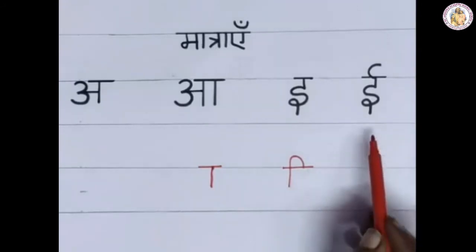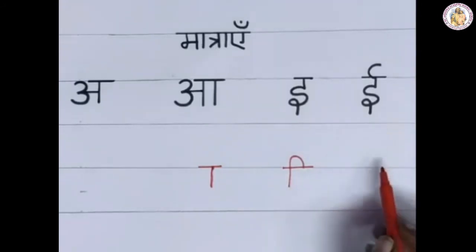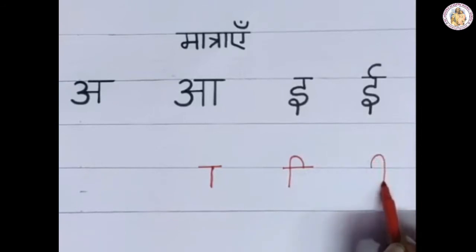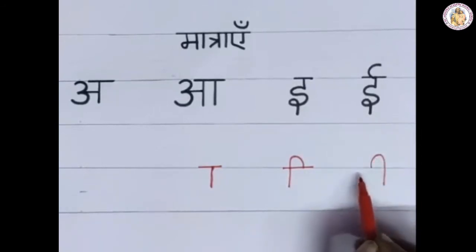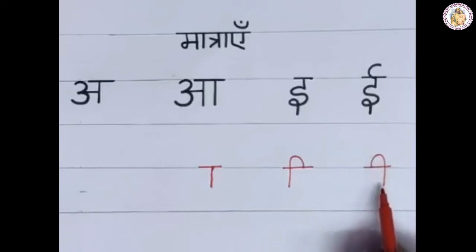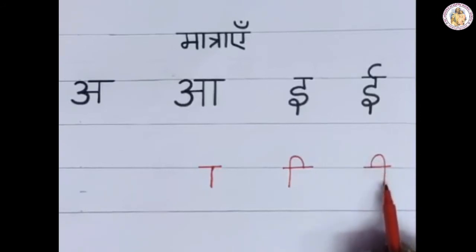Next is 'ee' (Badi i). Draw a curve and bend it towards the right side of the vyanjan. This is the 'ee' Matra — that is Badi-i-ki Matra.